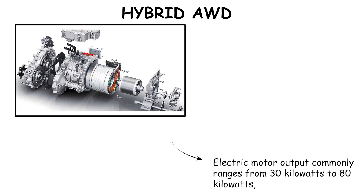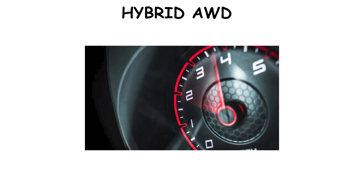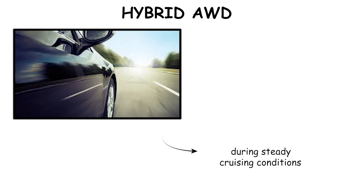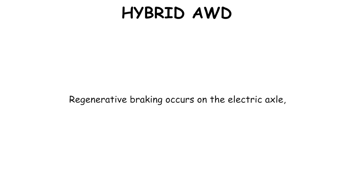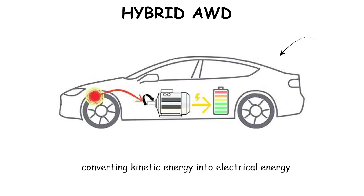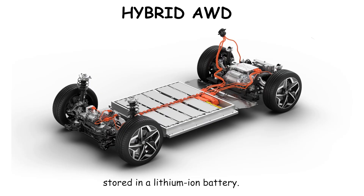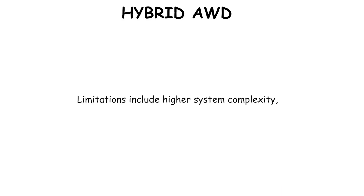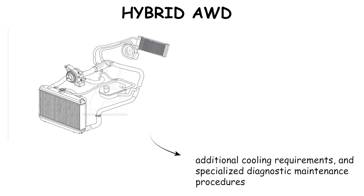Electric motor output commonly ranges from 30 to 80 kilowatts, providing immediate torque for traction control and low-speed acceleration. Fuel efficiency improves because the engine-driven axle can disengage all-wheel drive during steady cruising. Regenerative braking occurs on the electric axle, converting kinetic energy into electrical energy stored in a lithium-ion battery. This drivetrain is used in Toyota Hybrid AWD and Lexus E4 systems. Limitations include higher system complexity, additional cooling requirements, and specialized diagnostic maintenance procedures.